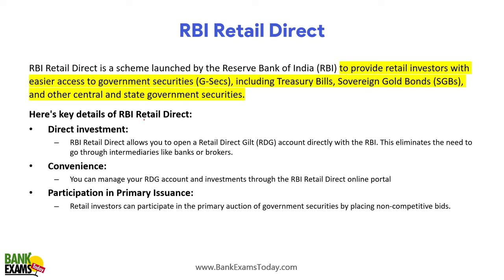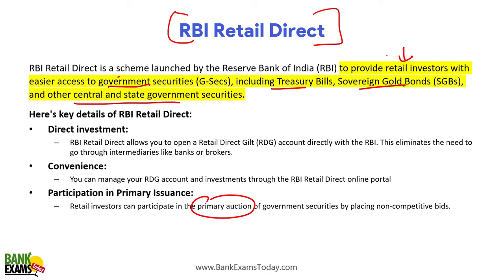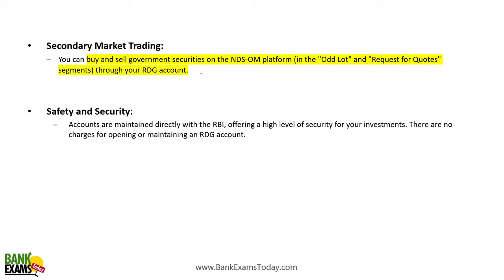RBI Retail Direct provides retail investors with easier access to government securities, including T-bills, Sovereign Gold Bonds, and other central and state government securities. Retail investors can directly buy government securities through the RBI Retail Direct app. No brokerage account or DEMAT account is required. Retail investors can also participate in primary auctions directly through the government.